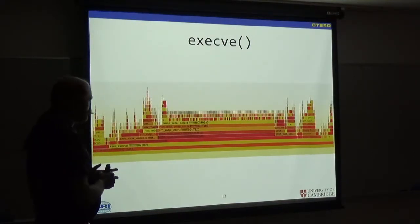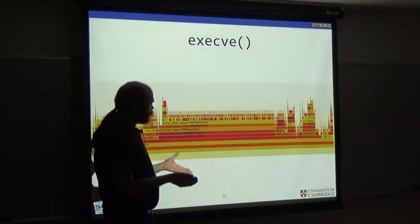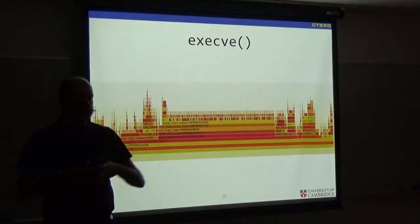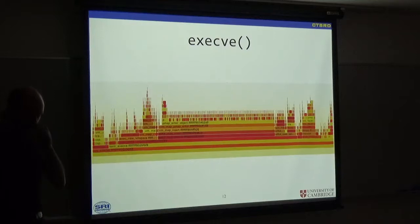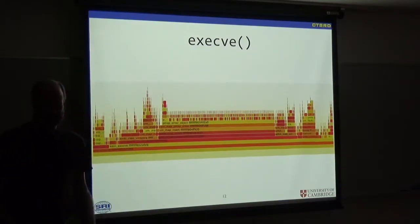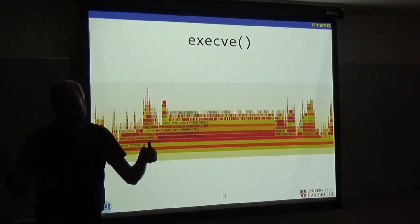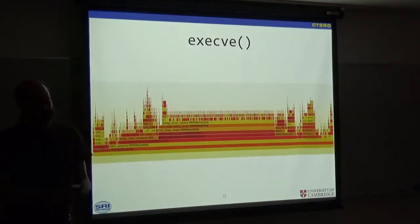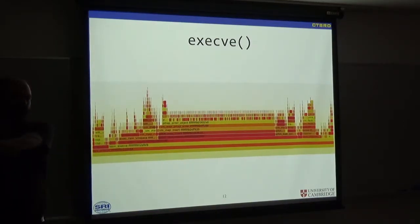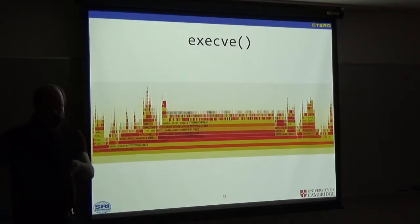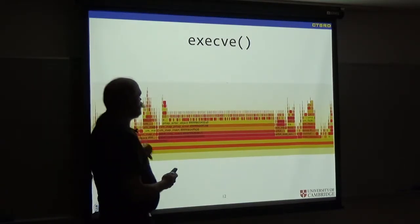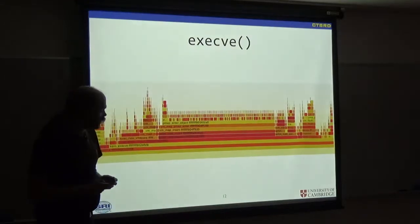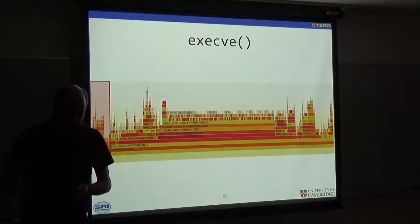We're going to start with the current. In the basic model of a process in a conventional, traditional Unix operating system, you have a process. Magically, it is there already at some point. Every process, other than init, is created by forking the process, which makes a complete copy of it, and then calling execve to replace the entire contents of the new program.